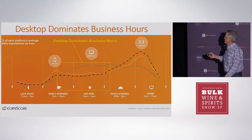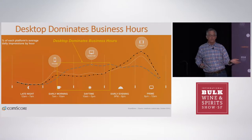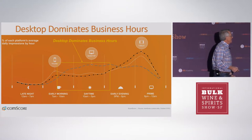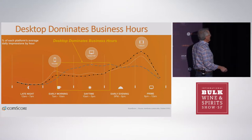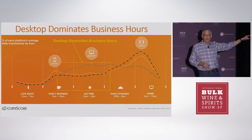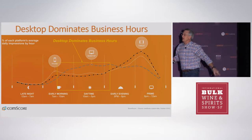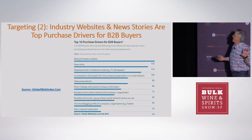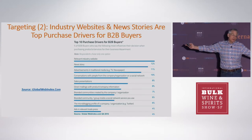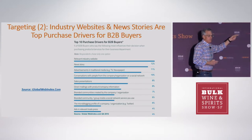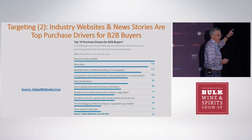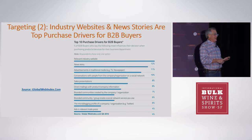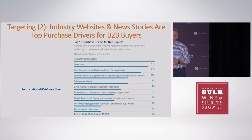Everybody says mobile is taking over — and it is in terms of total bandwidth used. On the other hand, there is a sweet spot in the desktop, and the sweet spot in the desktop is where people work. If you want to reach people where they work, you need to get them on their desktop. Go where they want to hang out — people read industry publications and websites, so it doesn't matter whether it's mine or anyone else's. That's where they're going to be hanging out.